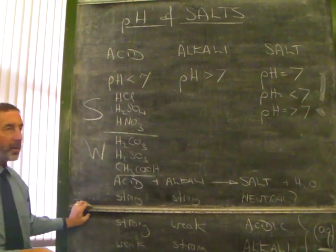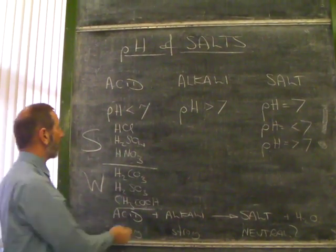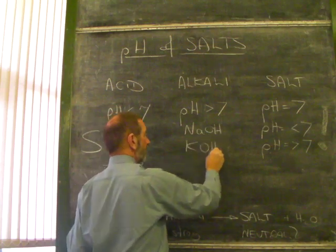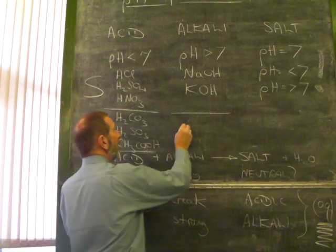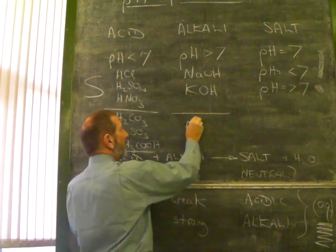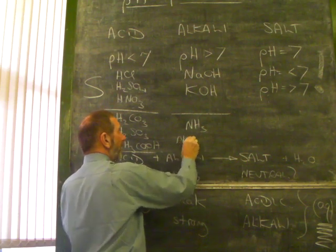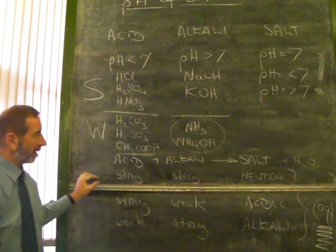How about alkalis? Do you remember the strong alkalis? Well, basically the ones made from alkali metals: sodium hydroxide, potassium hydroxide. The only weak alkali you're expected to know is ammonia. Ammonia forms ammonium hydroxide. It's the only weak alkali you're likely to come across.